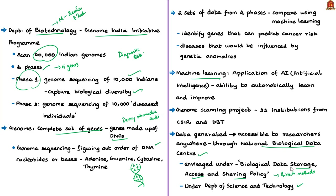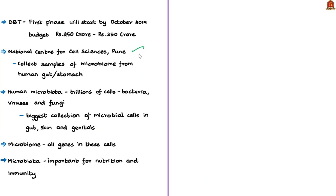The first phase is expected to start in October 2019, with an estimated budget of 250 to 350 crore rupees. The National Center for Cell Sciences in Pune will collect microbiome samples from the human gut. The human microbiota — made up of trillions of bacteria, viruses, and fungi — is largest in the gut, skin, and genitals. The microbiome refers to all the genes in these microbial cells, and even a small disturbance in microbial relationships can cause diseases.